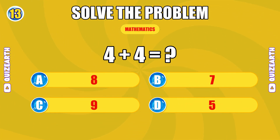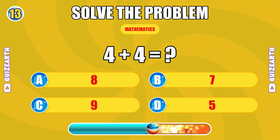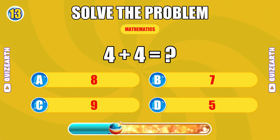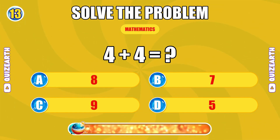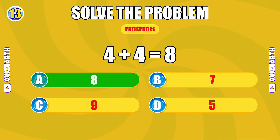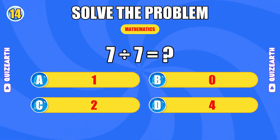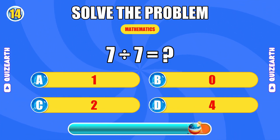What is four plus four? Sharp — the answer is eight. How much is seven divided by seven?